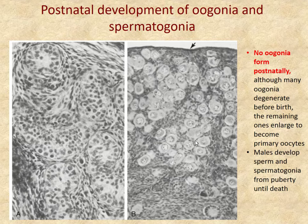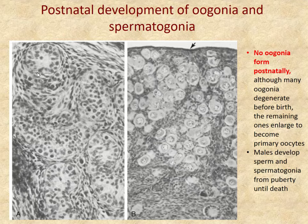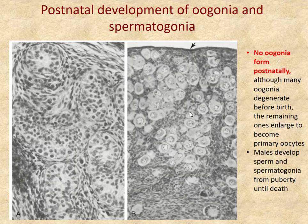In contrast to the male situation, where spermatogonia in the walls of the seminiferous tubules produce sperm throughout the male's life from puberty until death, the oogonia that the female has at birth are all she will have — no more are produced. In fact, many of them will degenerate from that beginning point.